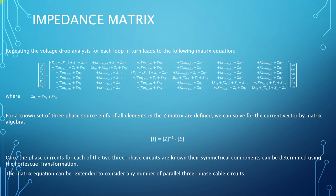For a known set of source EMFs, the currents in each of the six conductors can be calculated. Once the currents in each of the two three-phase circuits are known, their symmetrical components can be determined using Fortescue's transformation. This matrix equation method can be extended to consider any number of parallel three-phase circuits.